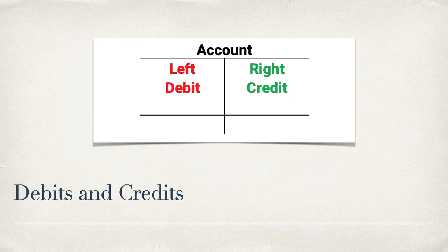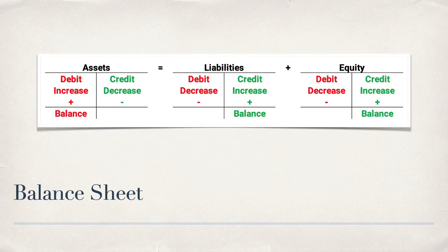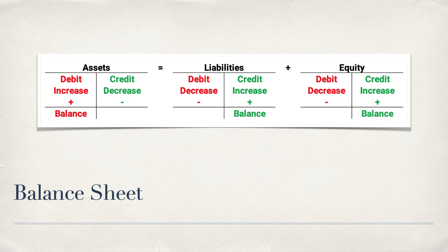First of all, you need to remember how to do debits and credits. Debit is just on the left and credit is on the right — it doesn't mean good or bad or plus or minus in general. For a specific account it will, but debits are on the left and credits are on the right. I'm using red for the left and green for the right. Our balance sheet accounts are assets, liabilities, and equity. Assets take a debit to increase and a credit to decrease. Because of the accounting equation — assets equal liabilities plus equity — liabilities and equity are mirror images of assets.